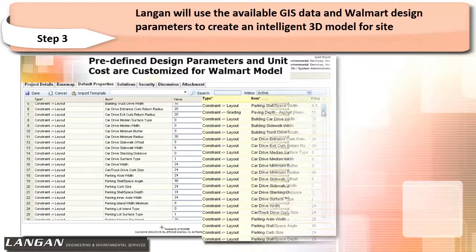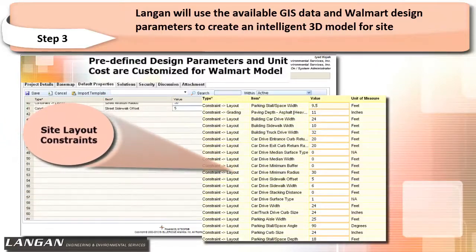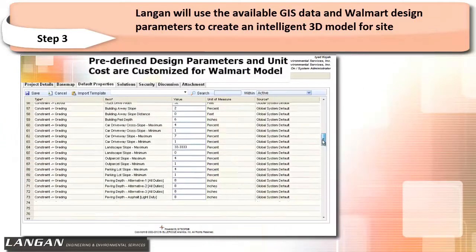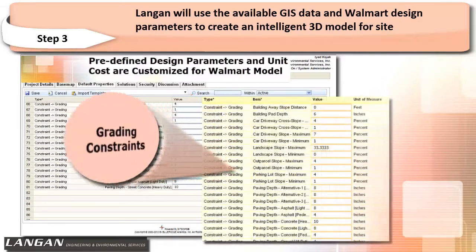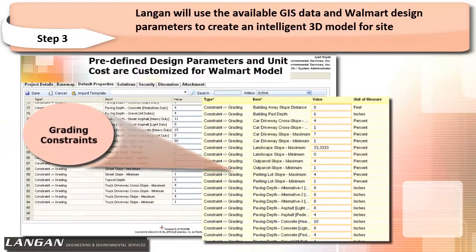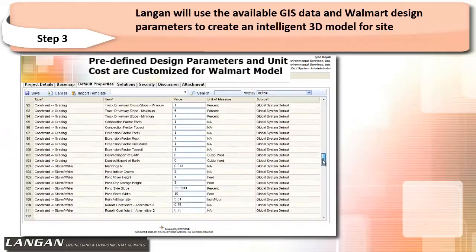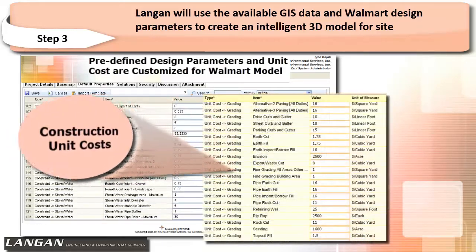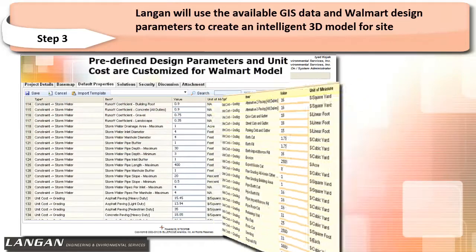In order to create an intelligent model that understands Walmart standards, Langan customized design parameter templates that are specific to Walmart needs. Design parameters such as site layout and grading, as well as itemized construction costs, are embedded into the intelligent model.